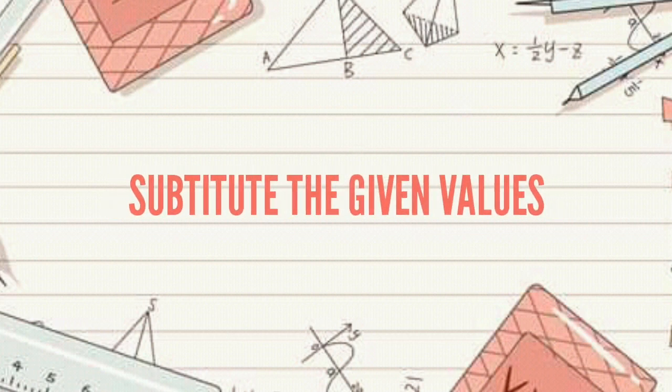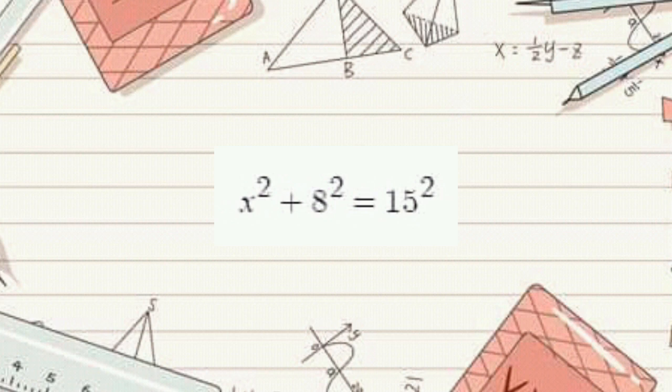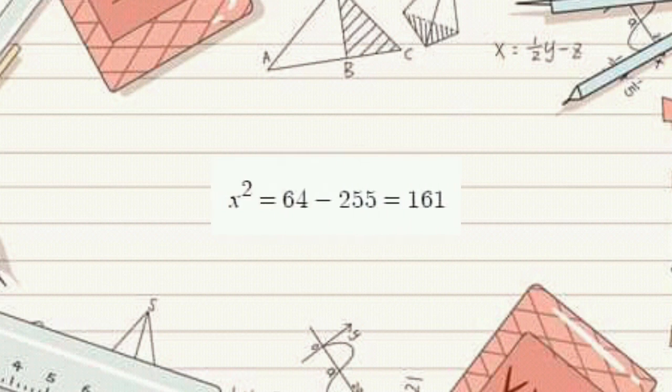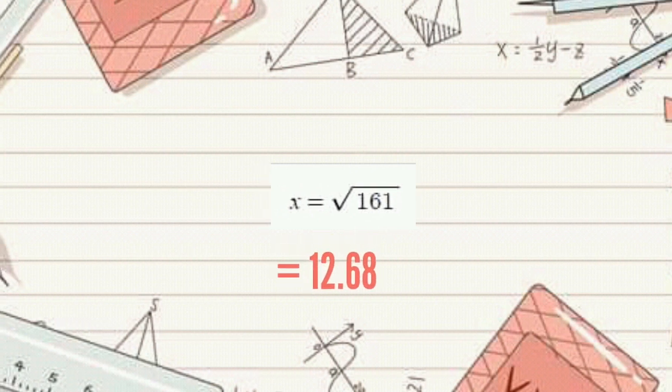we subtract the altitude and the radius of the ferris wheel and the answer is 8 meters. Now, we substitute the value of y² and r². x² + 8² = 15². Now, we will transpose the equation. x² = 15² - 8². So, x² = 225 - 64 = 161. To cancel the exponent of x, we will now find the square root of the equation.